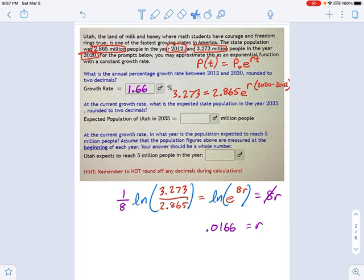Actually, the answer is something like 0.0166 equals R, but I converted that to a percentage. So next step. At the current growth rate, what is the expected state population in the year 2035? Now, that's a little more straightforward. All that's asking us to do is plug in. So we say P, and what is the year 2035? Well, that's interesting.